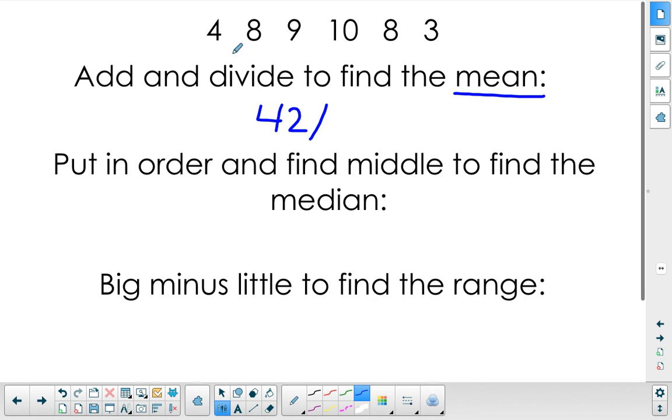Then we divide by how many data points we have. So 3, 4, 5, 6, and that equals 7.